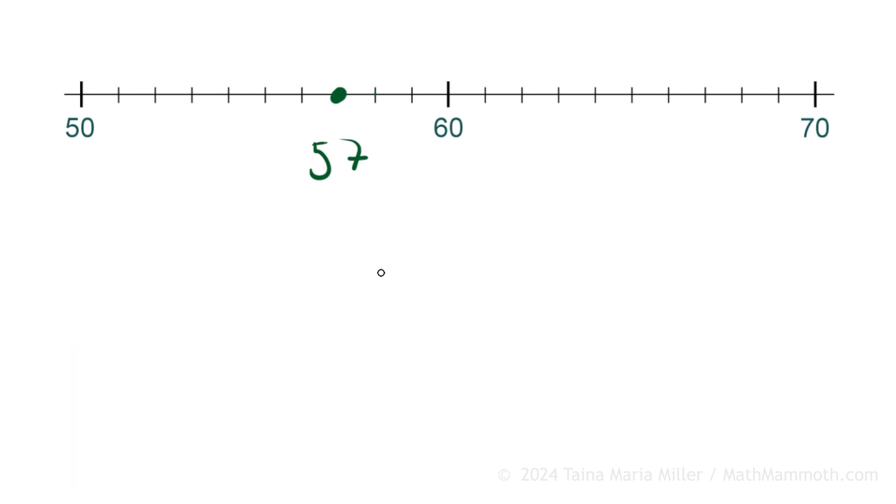57 is between 50 and 60, but which one is it closest to? Clearly 57 is closer to 60 than it is to 50. So then we say that 57 gets rounded to 60 when we round to the nearest 10.